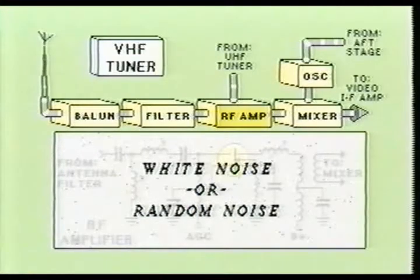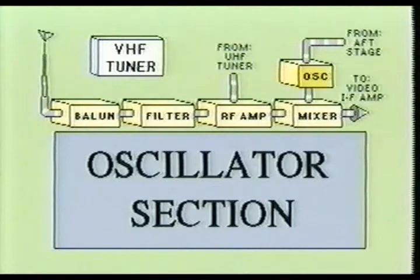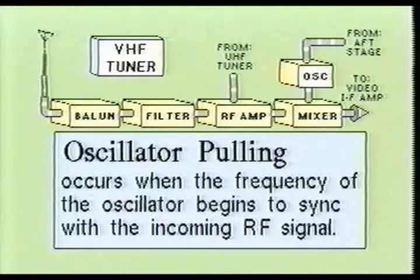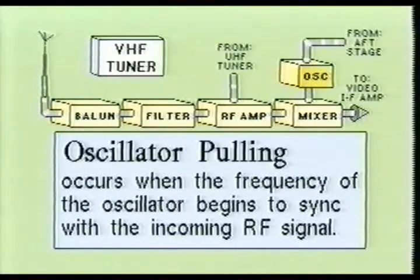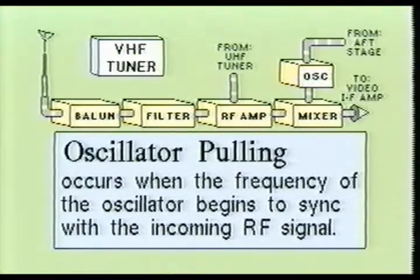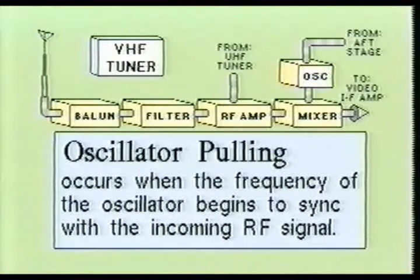Specially designed FET devices provide the best low noise performance. At VHF frequencies, it becomes very difficult to combine the oscillator and mixer sections in the same shielded compartment within the tuner assembly due to a phenomenon called oscillator pulling. Oscillator pulling occurs when the local oscillator stage begins to synchronize its frequency with the frequencies of the incoming RF signal. If the incoming RF signal and the local oscillator signal synchronize, a loss of reception will occur because the intermediate frequency signal will no longer be produced. To avoid the problem of oscillator pulling, the oscillator and mixer stages are almost always contained in separate compartments within the tuner assembly.